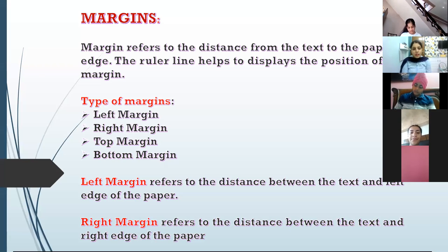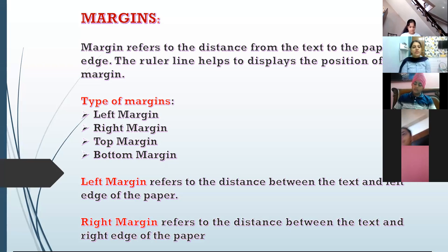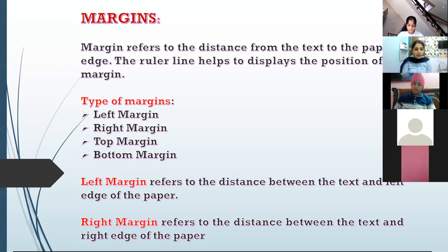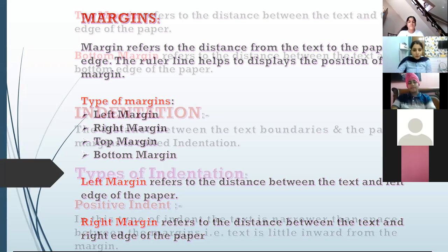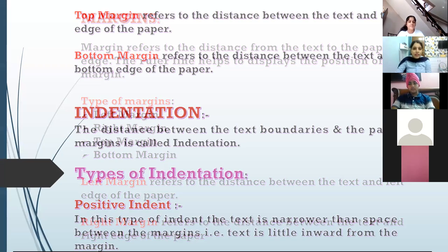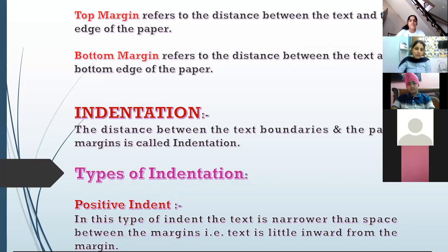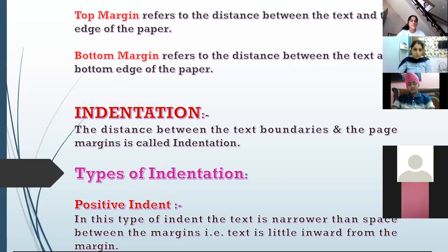Four types of margins are there: left margin, right margin, top, and bottom. Left margin is the distance between the text and the left edge of the paper. Right margin is the distance between the text and the right side. Similarly, top margin is the distance between the text and the top edge of the paper, and bottom margin is the distance between the text and the bottom edge.